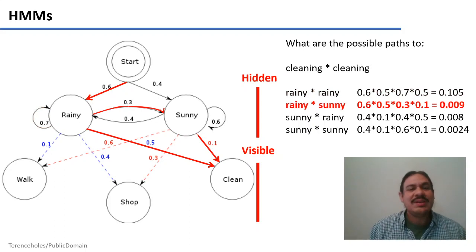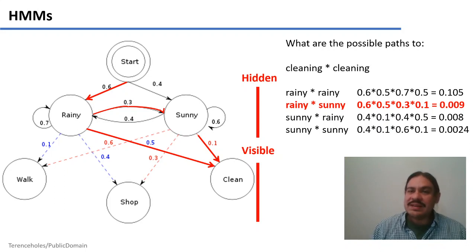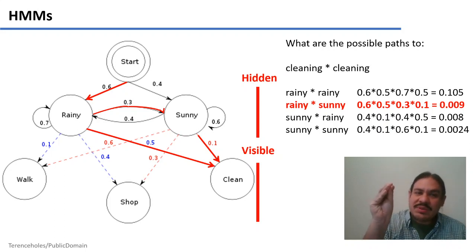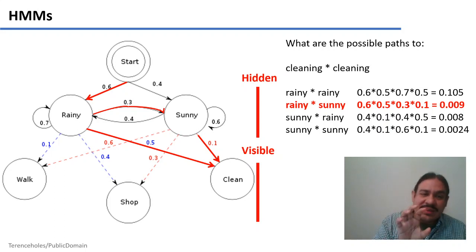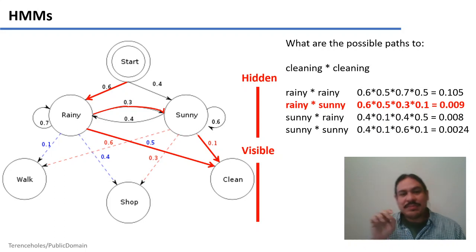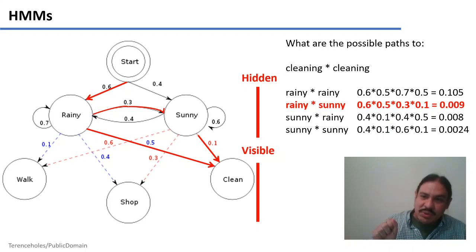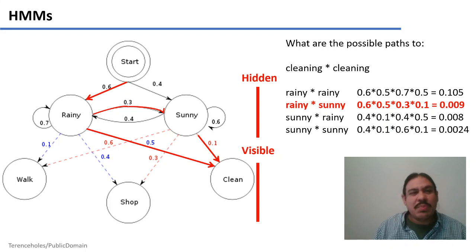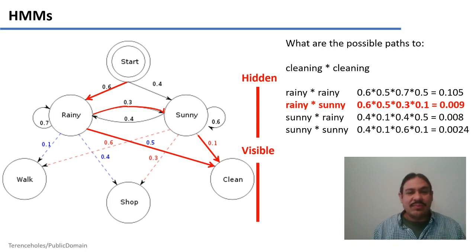Let's look at a second permutation. If you know that a person spent two days cleaning, what is the probability that the first day was rainy and the second was sunny? The probability of a rainy day is 60%, and on rainy days people cleaned — that's 0.5. But then the second day is sunny, and the probability of transitioning from rainy to sunny is 0.3. The probability of cleaning on a sunny day is 0.1. All this multiplication is 0.009, which is about 10 times smaller than the previous result. So the weather might have been rainy-sunny, but it's much less likely compared to the probability of the two days being rainy-rainy. I'll leave it to you to follow the paths for the other two permutations.